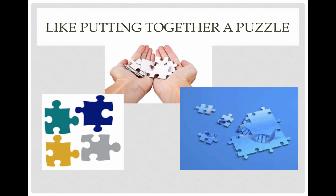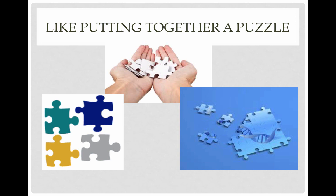Today we're going to share some specific tools of how we start to go about doing this. As a reminder, we're performing a systematic review — we bring together all empirical evidence that fits pre-specified eligibility criteria. It uses explicit systematic methods selected with a view to minimizing bias and providing more reliable findings. Methods include search terms, inclusion criteria, and the search engine used — all included in the text. This is the methods paragraph that we had you write in the topic paragraph and it will also be included in your full draft of your literature review.